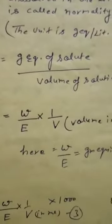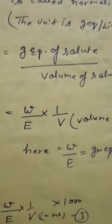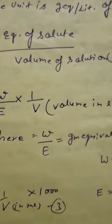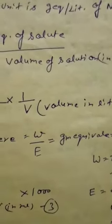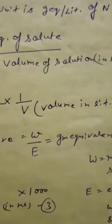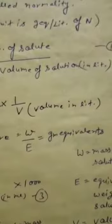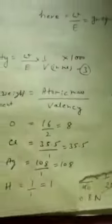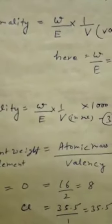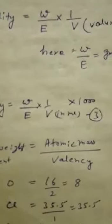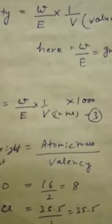Normality is equal to W upon E, multiplied by 1 over V, where V is volume of solution in litres, W is the mass of solute in grams, and E is the equivalent weight of solute. So W divided by E gives gram equivalents. If the volume is given in mL, the formula becomes: normality equals W upon E, multiplied by 1 over V(mL), multiplied by 1000 to convert mL to litres.